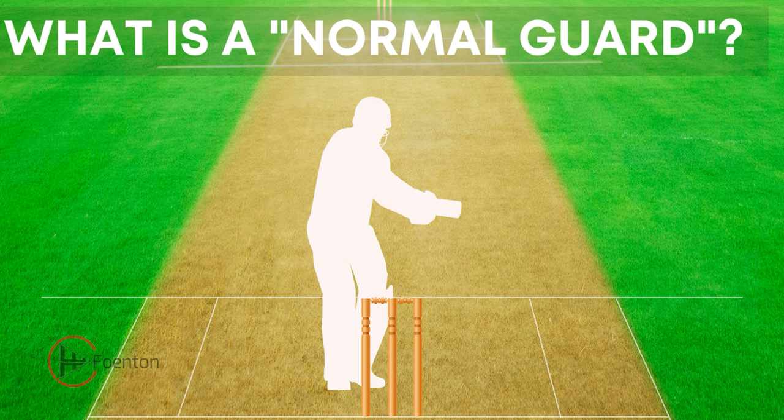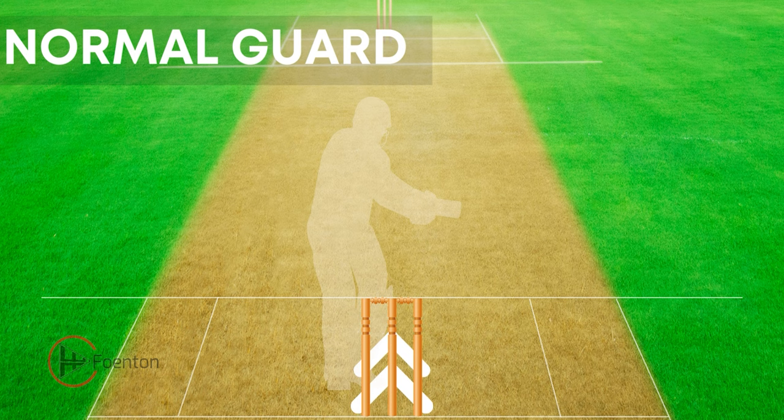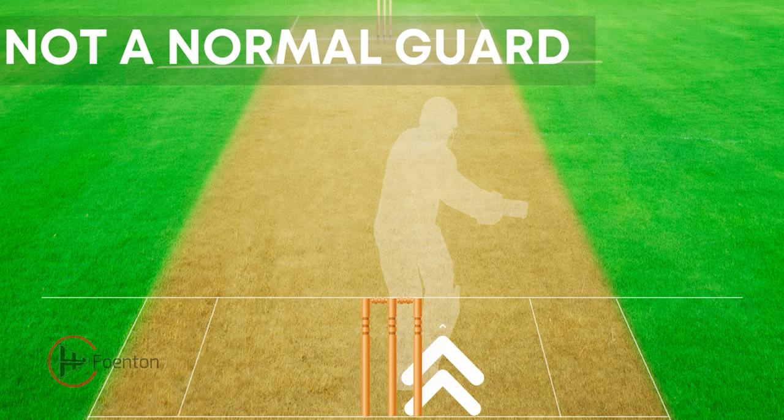So what exactly is a normal guard position? A batsman takes guard from the umpire to know where he is standing on the crease in relation to the stumps. The common guards asked for are leg stump, middle stump, and leg and middle. If the batsman moves either on the leg side or on the off side of the stumps, it is not considered a normal guard.